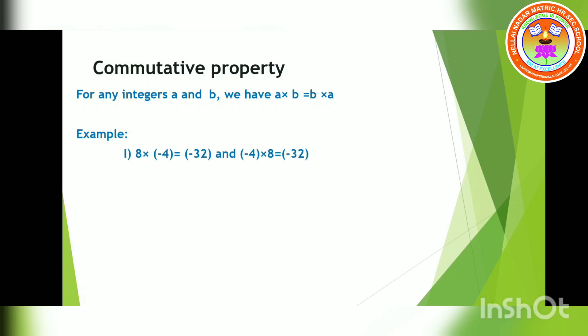Example: 8 into minus 4. I have to multiply the numbers first and, according to rule 2, put a minus sign. Eight fours are 32, with a minus symbol — unlike symbols, one plus and one negative — so the answer is minus 32. Now reversing the order: minus 4 into 8. Again it is minus 32. So when I change the order and multiply, I get back the same answer.